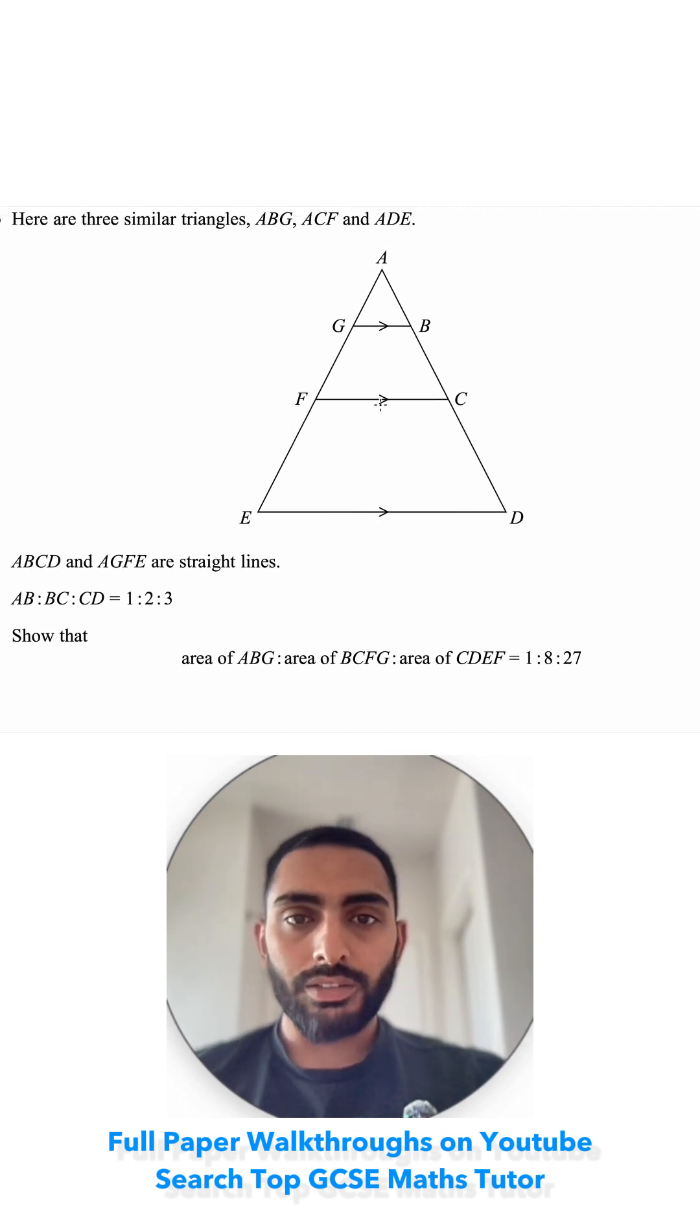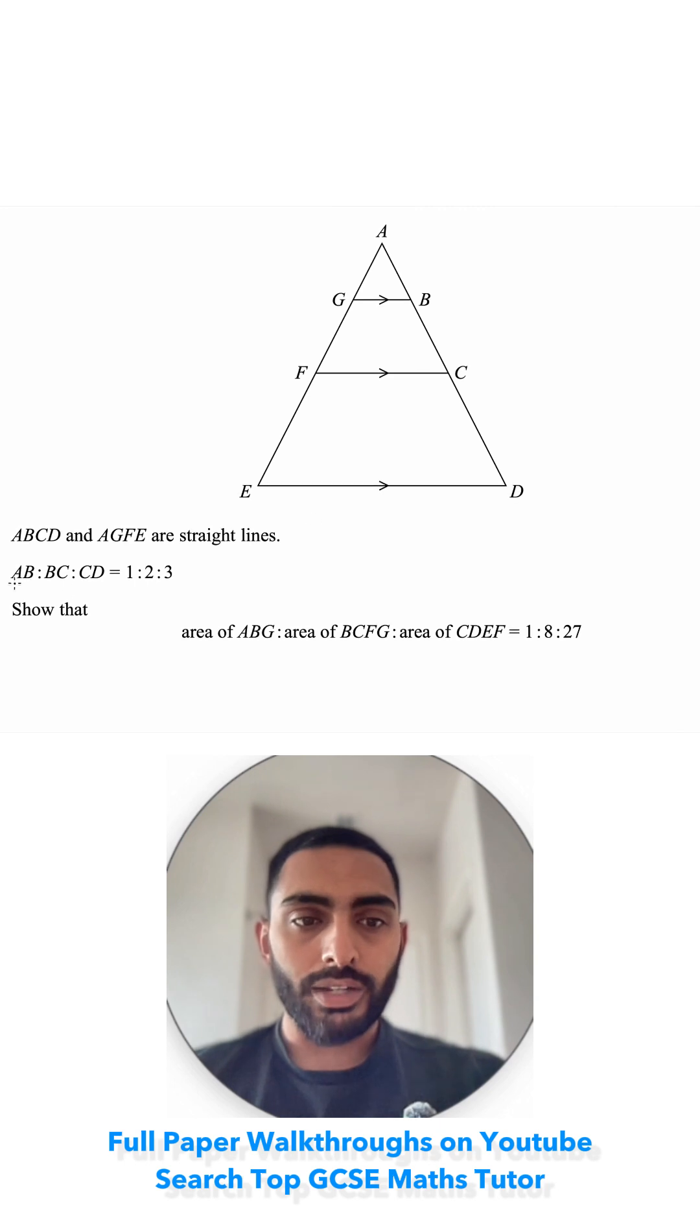ABCD and AGFE are straight lines, so that's a straight line and that's a straight line. AB to BC to CD is equal to 1 to 2 to 3. So A to B is 1 and A to C is 2, so this distance is 2.